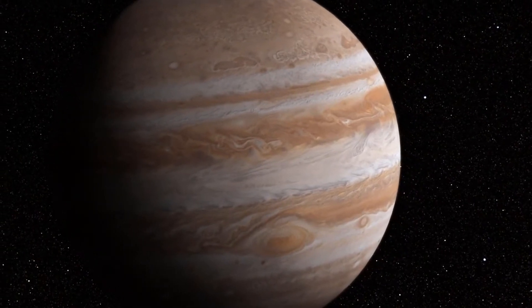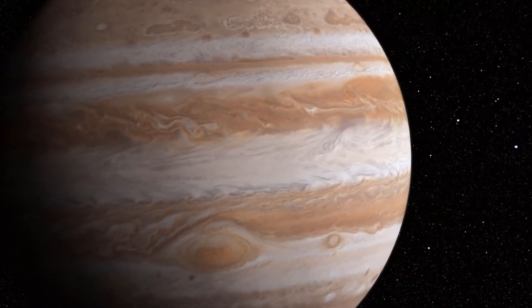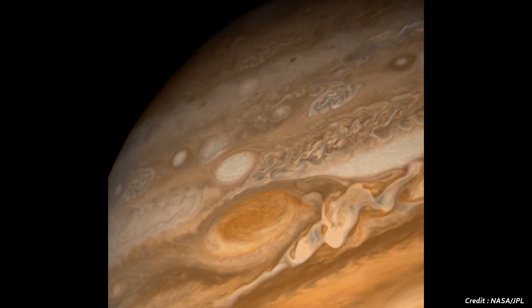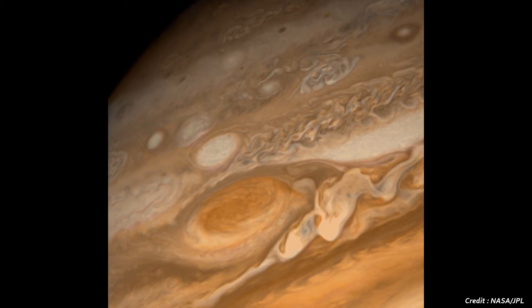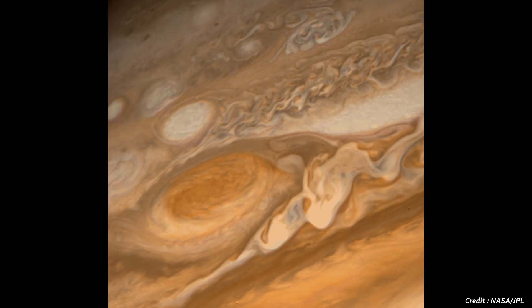Incredible close-up images of Jupiter's famous storm, the Great Red Spot, was also captured like never before. Measuring 16,350 kilometers in width, it is large enough to engulf Earth, making it the largest storm in our solar system.